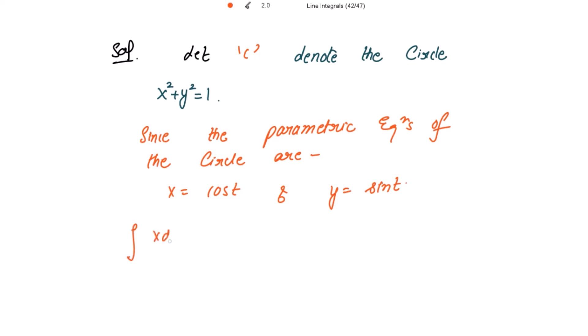So the integral of xdy minus ydx along the circle C, this becomes x is cos of t, so this is cos of t into dy, that is cos of t dt from here.